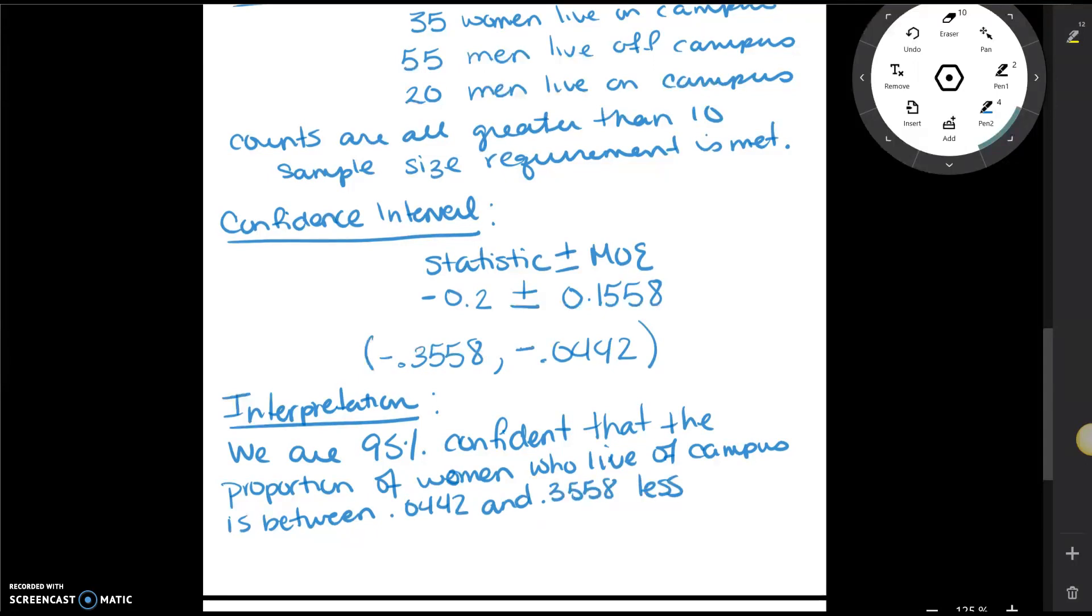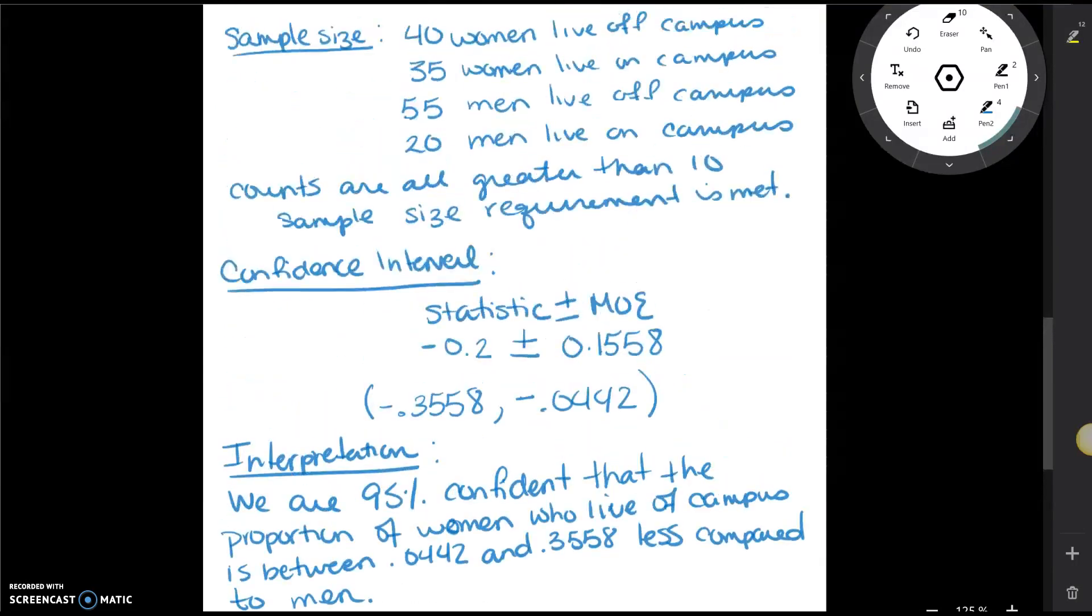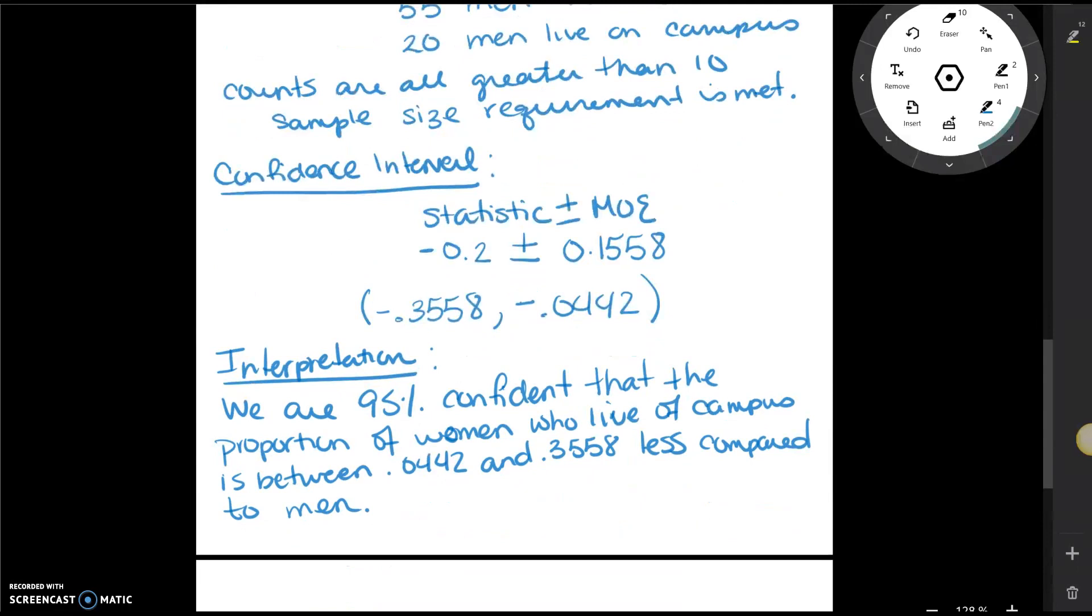So notice this 'less' is taking care of the negative signs up here compared to men. So also notice here since 0 is not in the interval, that tells me that the two proportions being equal is not a reasonable value. So we really do think that there are fewer women who live off campus compared to men.